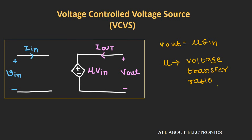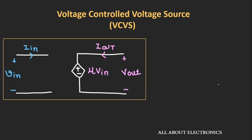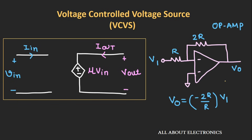Now let's see the practical example of the voltage-controlled voltage source. Whenever we configure an op-amp in either inverting or non-inverting configuration, it is an example of a voltage-controlled voltage source. Once we adjust the gain of the op-amp, the output voltage Vout depends upon the input voltage, so as we change the input voltage Vi, the output voltage changes accordingly.